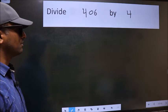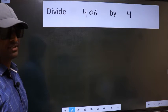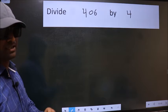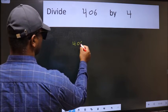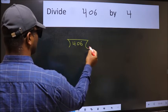Divide 406 by 4. To do this division, we should frame it in this way: 406 and 4 here.